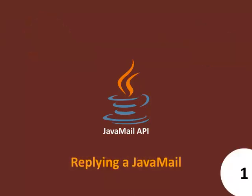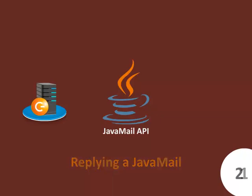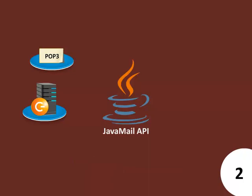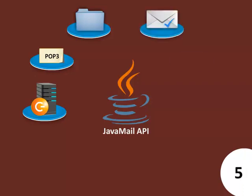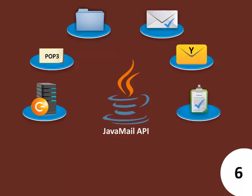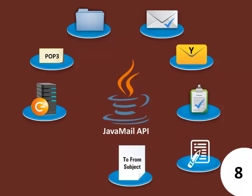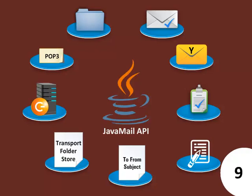Replying to a Java Mail requires the following steps: Getting the session object with POP and SMTP server details in the properties. Creating the POP3 store object and connecting to the store. Creating the folder object and opening the appropriate folder in your mailbox. Retrieving the messages. Iterating through the messages and checking if you want to reply. Gathering all information about the message. Building the reply message using the message reply method, setting the headers, and sending it through the Transport object. Finally, closing the transport, folder, and store objects respectively.